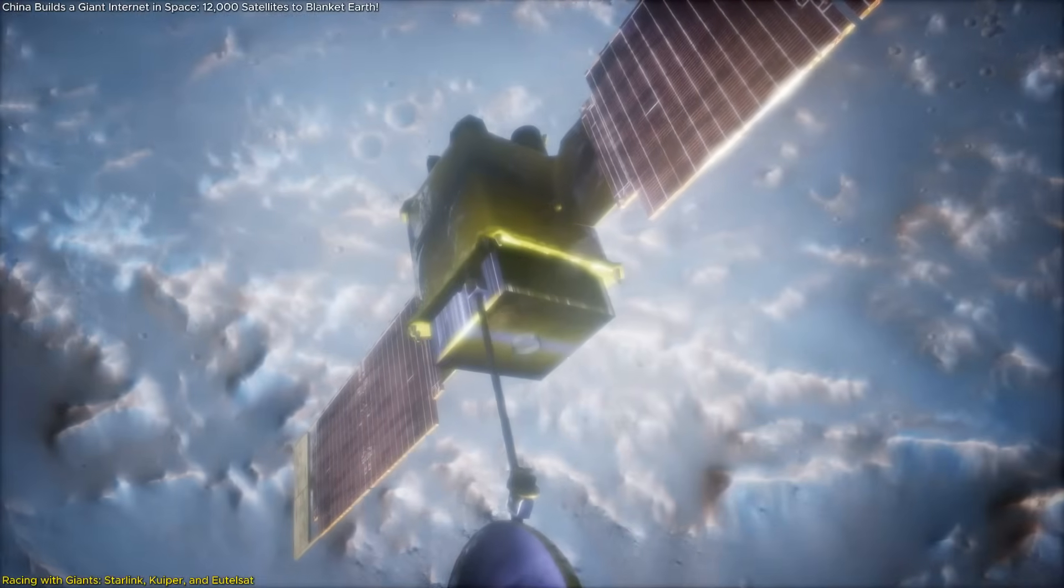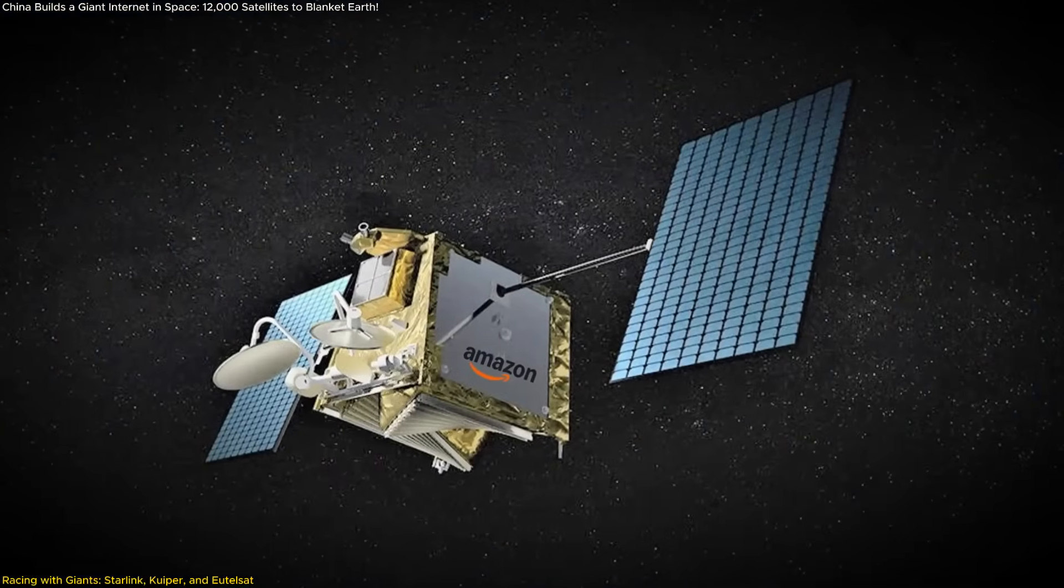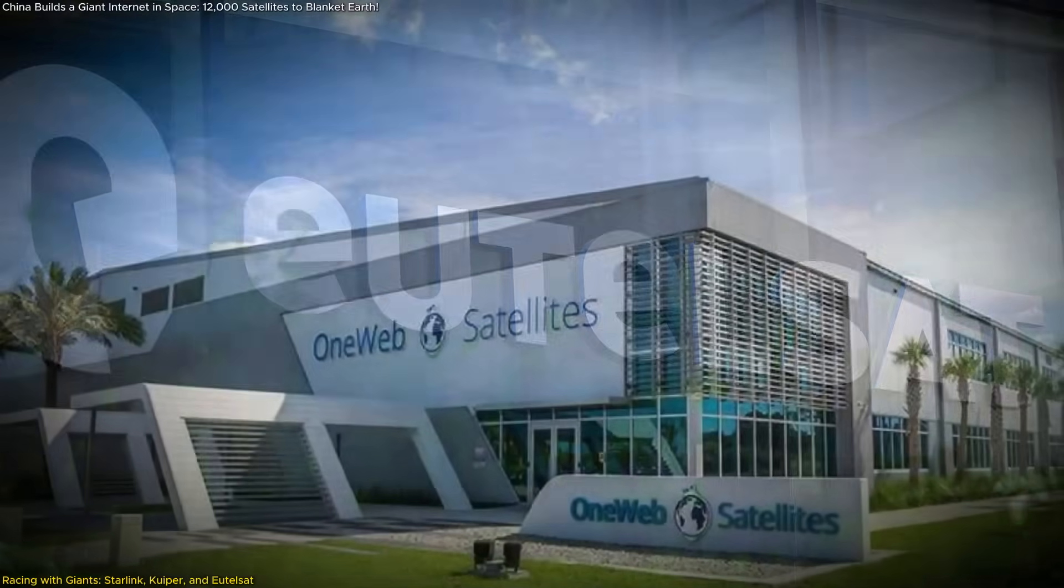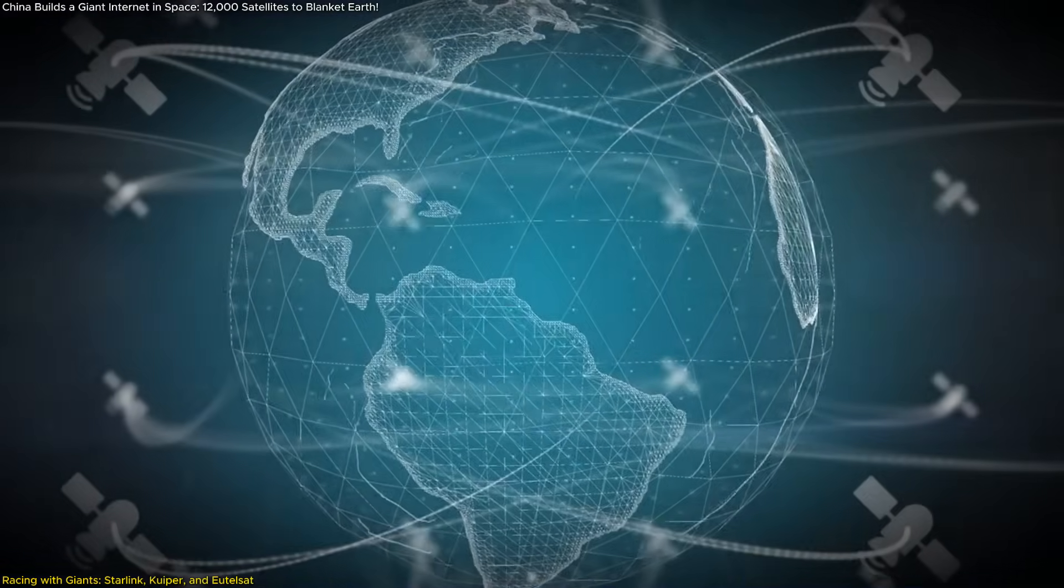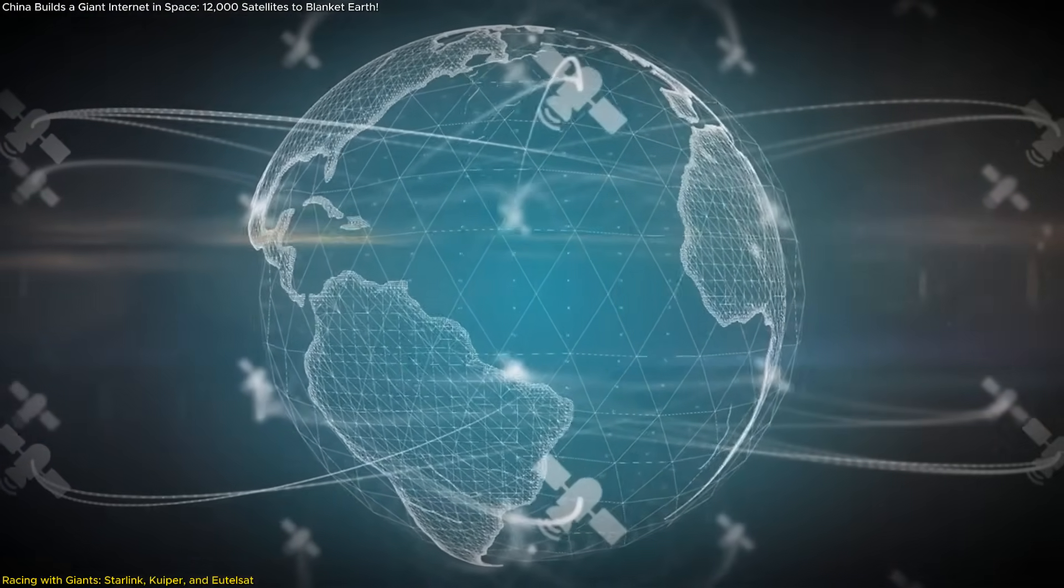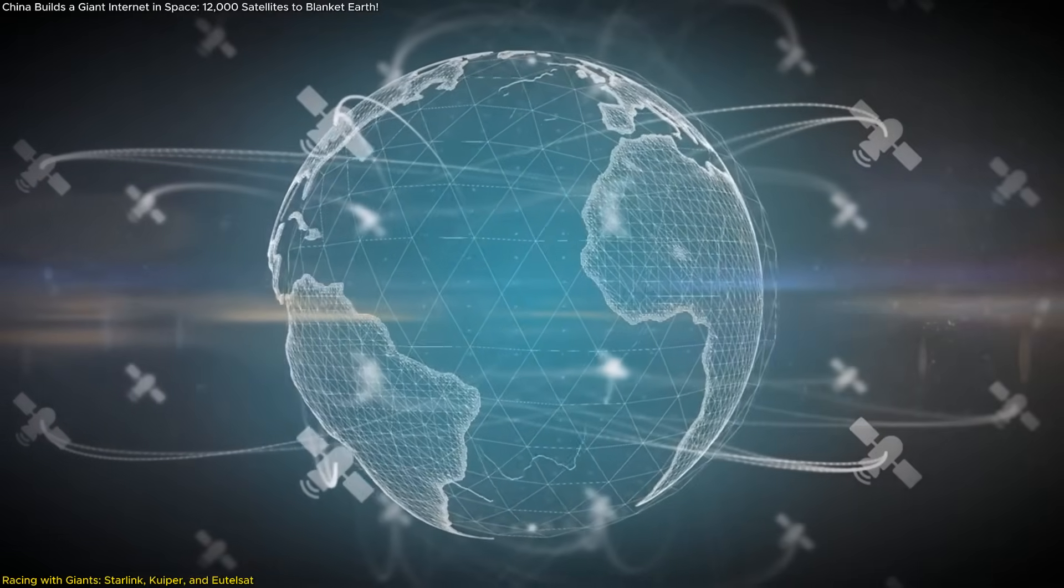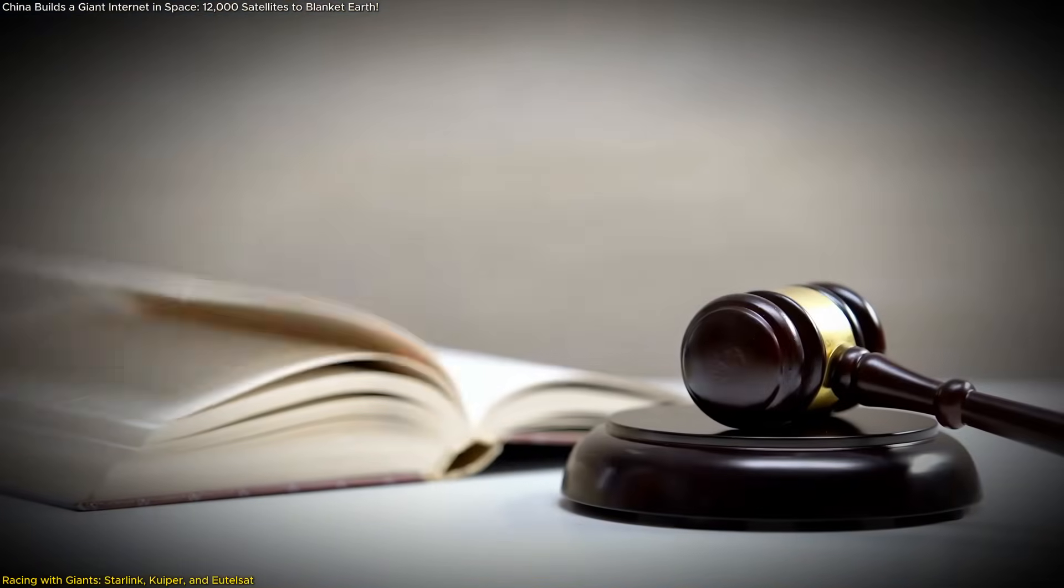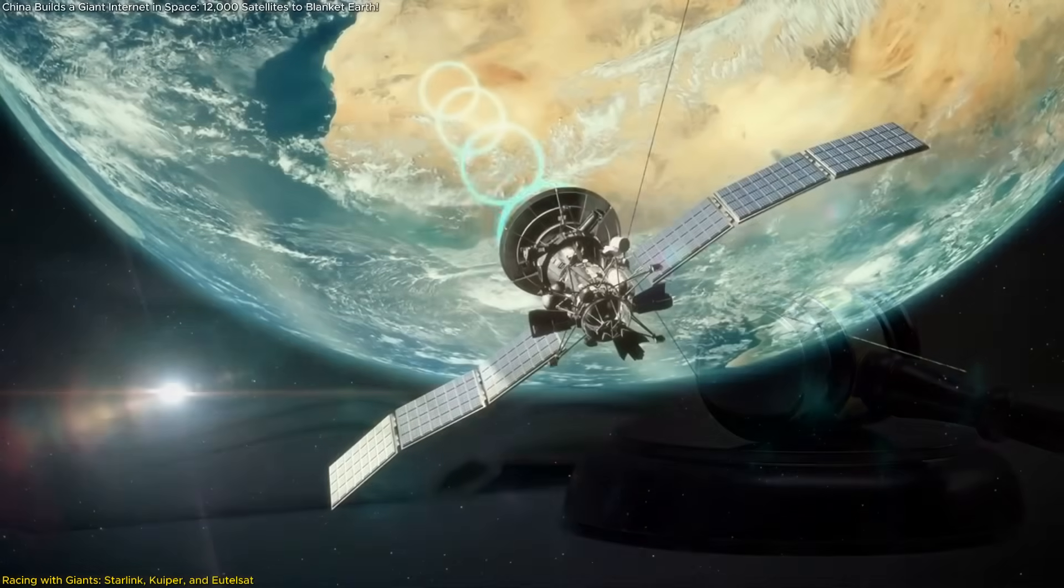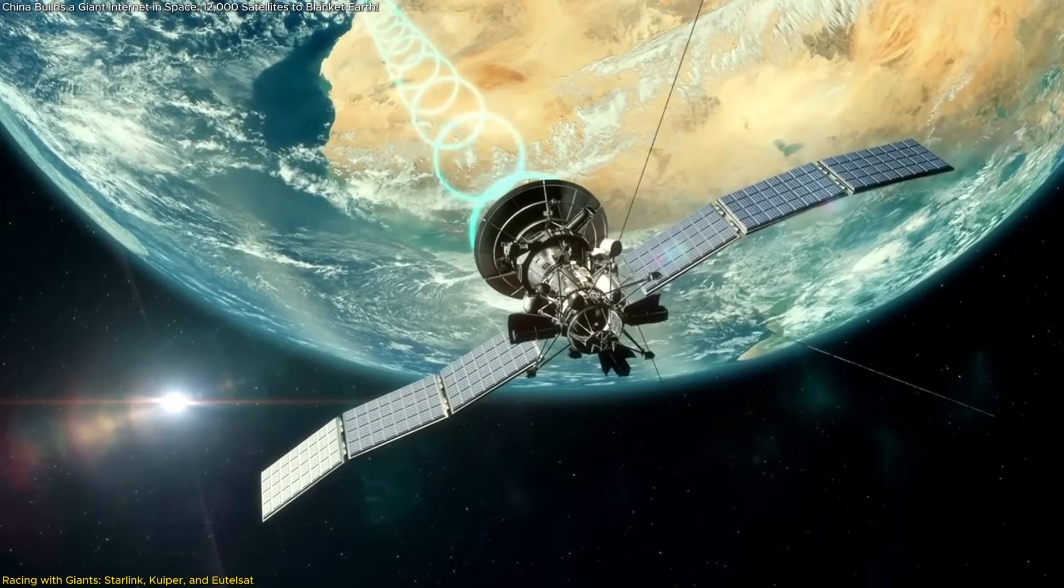Europe's EUTELSAT, which merged with OneWeb, brings a hybrid model into the race. With 30-plus geostationary satellites and several hundred LEO satellites, EUTELSAT already provides broadband services in areas like Ukraine using thousands of active user terminals. Their model focuses on government contracts and enterprise connectivity more than consumer-based offerings.